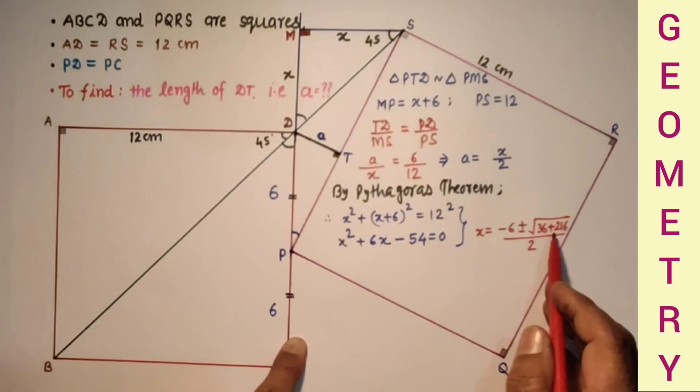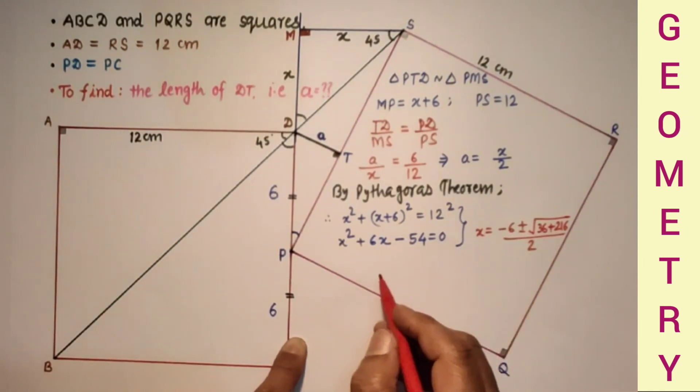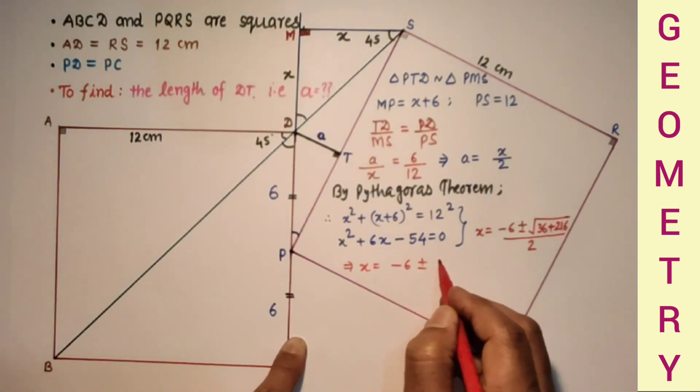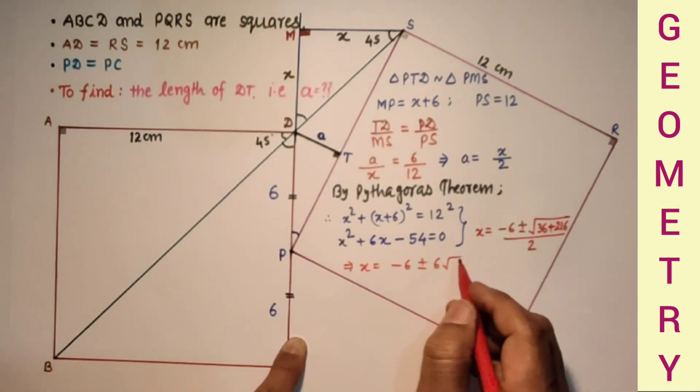36 plus 216 will be 252, and that is equal to square root of 252 which is 6 root 7. So we can say that X is equal to minus 6 plus minus 6 root 7 by 2.